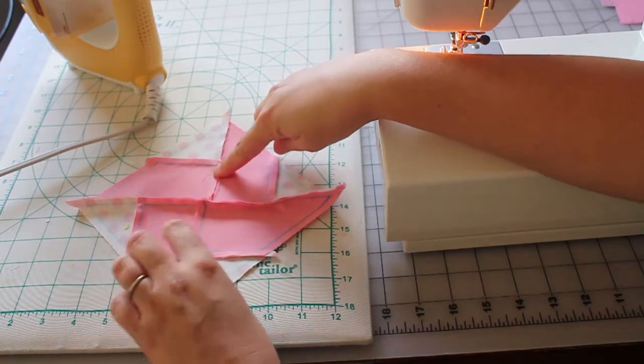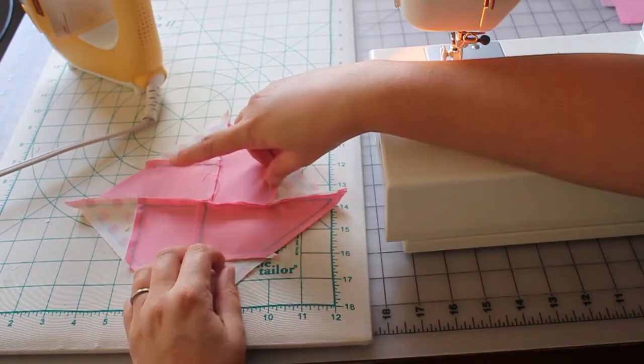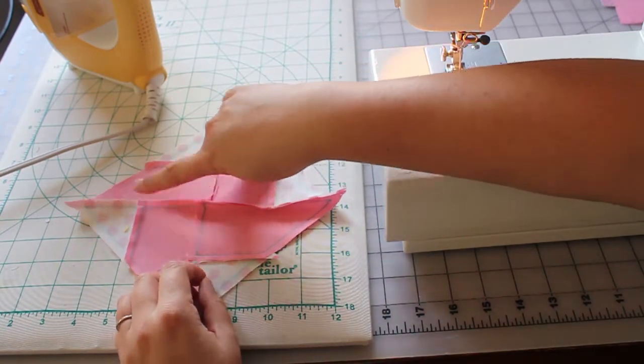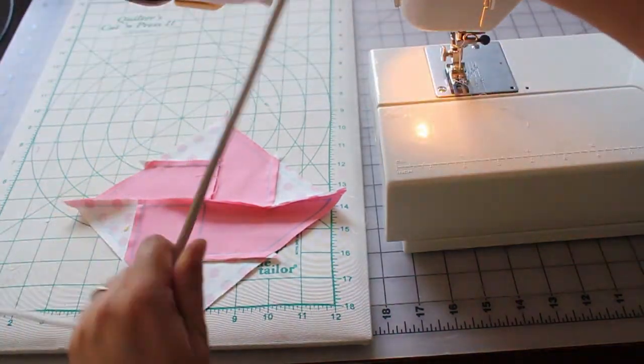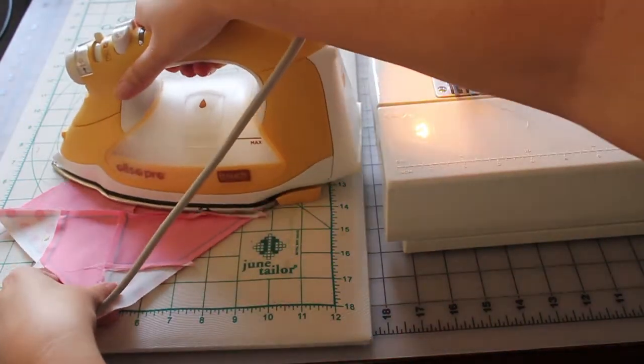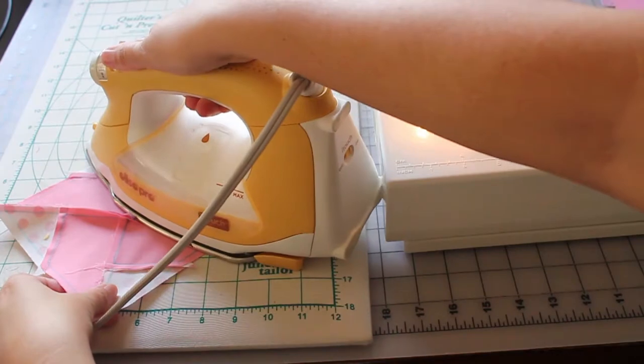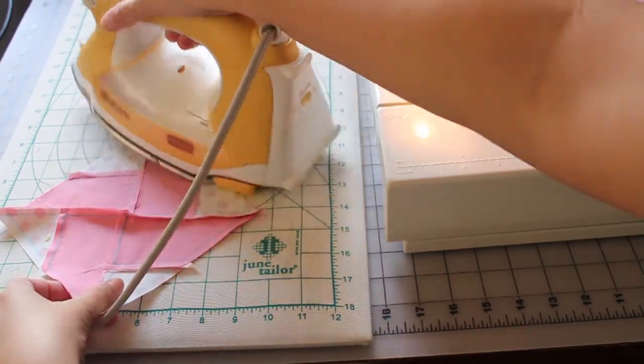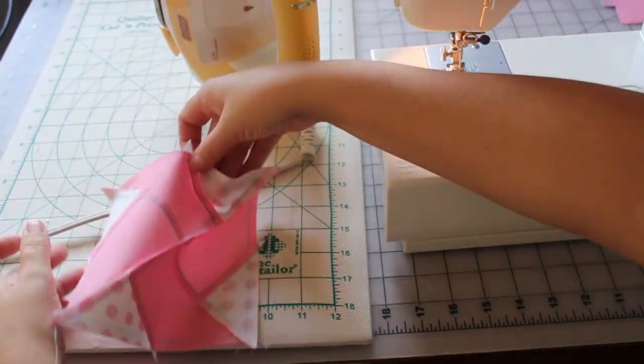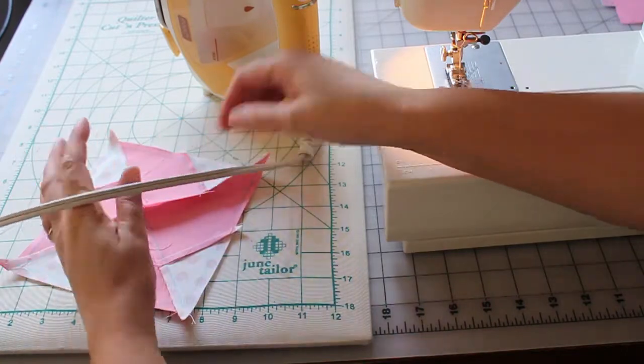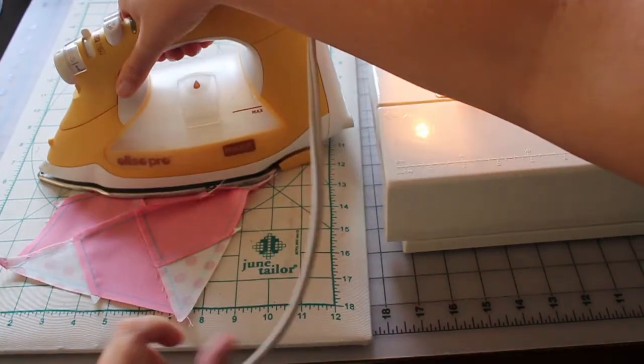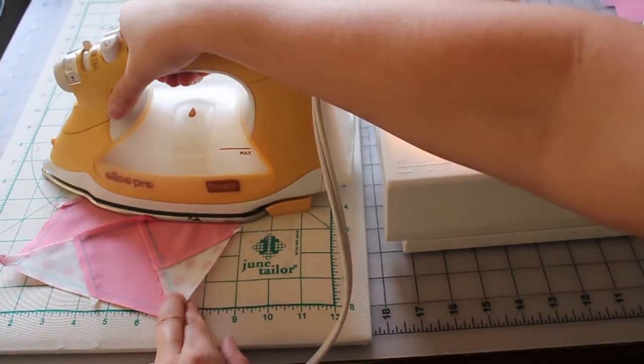On the back here, I have seams going in this direction and seams going in this direction. So that means that swirling my seams is going to be the easiest way to reduce all that bulk. So I'll go ahead and press on this side. Turn it around and press on this side.